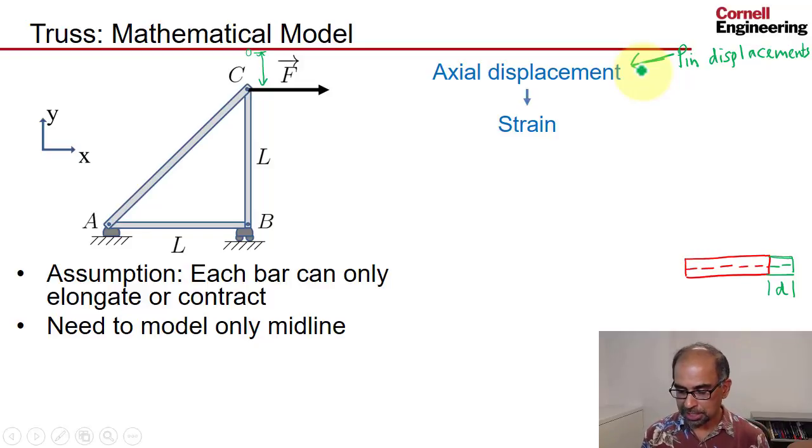And once I know the axial displacement, I can find the strain, because the strain epsilon is just going to be the axial extension divided by the length of the bar.